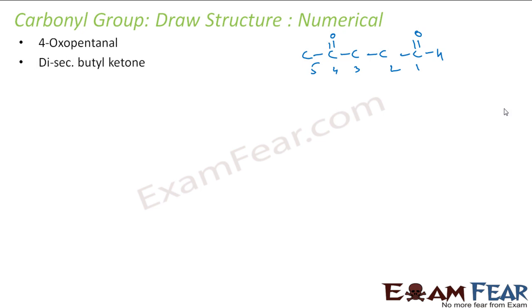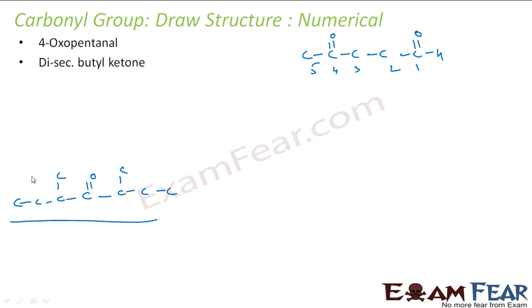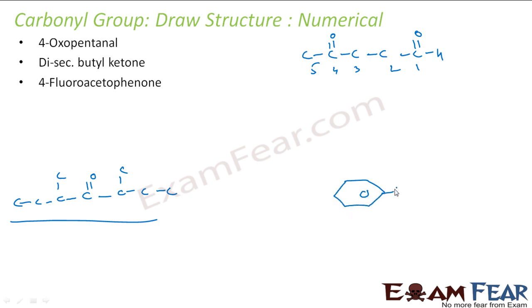Disecbutylketone — that means this is a common ketone and two sides have secbutyl. Secbutyl is something like this. So this is my structure — it's my ketone, disecbutyl. Then I have 4-fluoroacetophenone. So my acetophenone is this structure. And 4-fluoro — this is 1, 2, 3, 4 — this is my fluoro position. So 4-fluoroacetophenone will look like this.